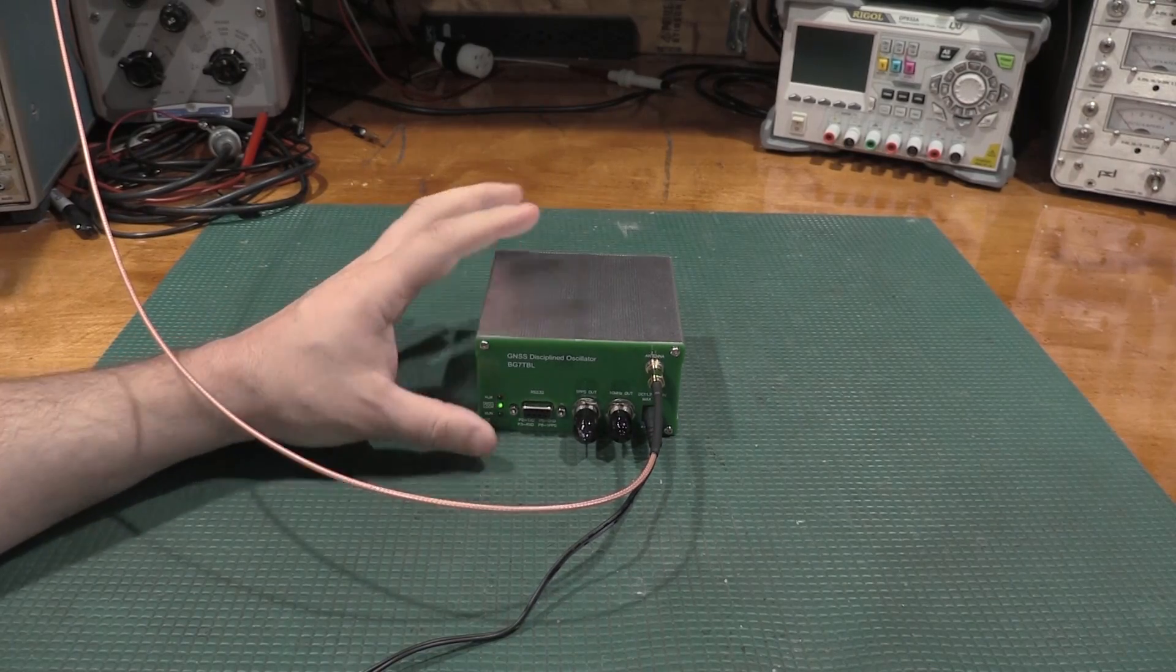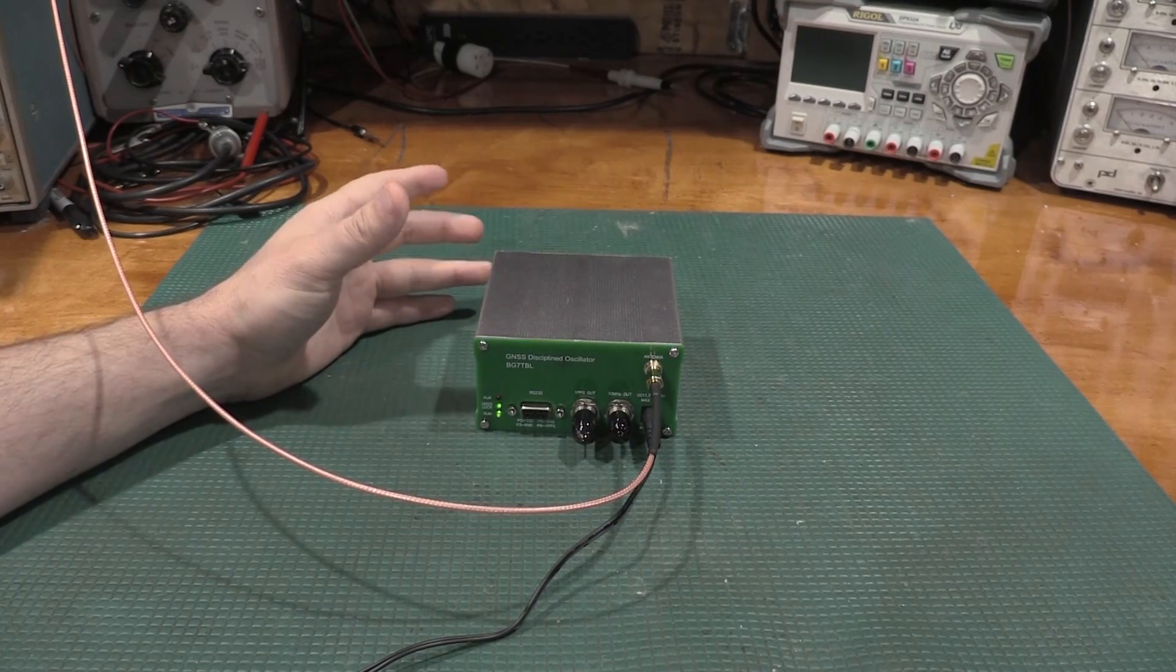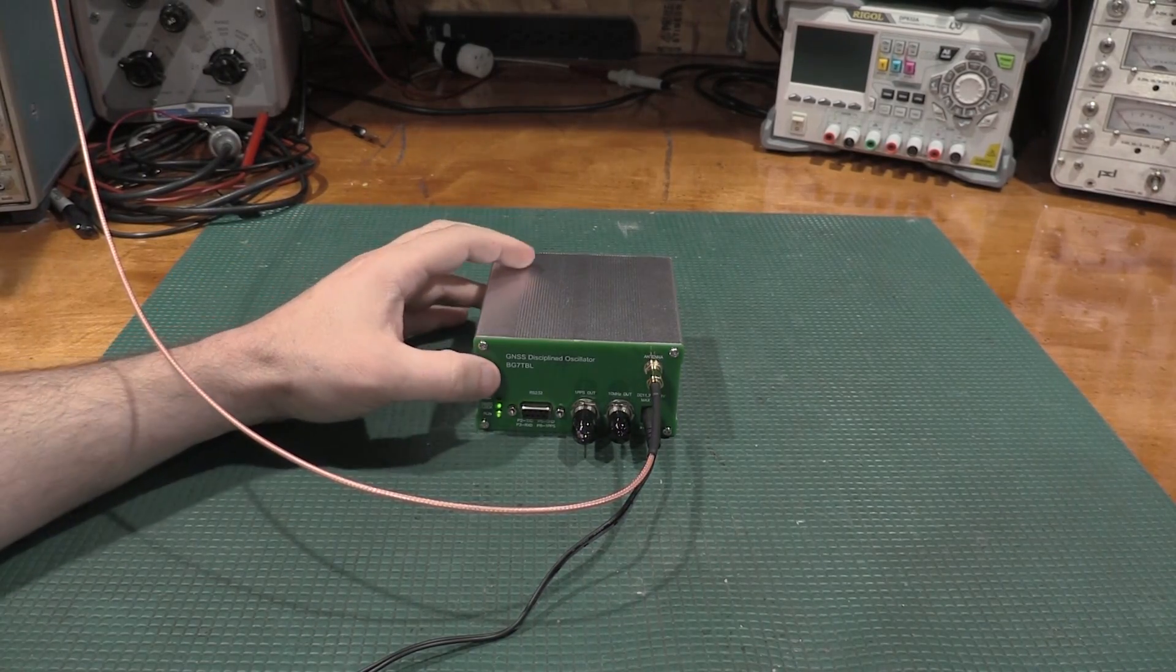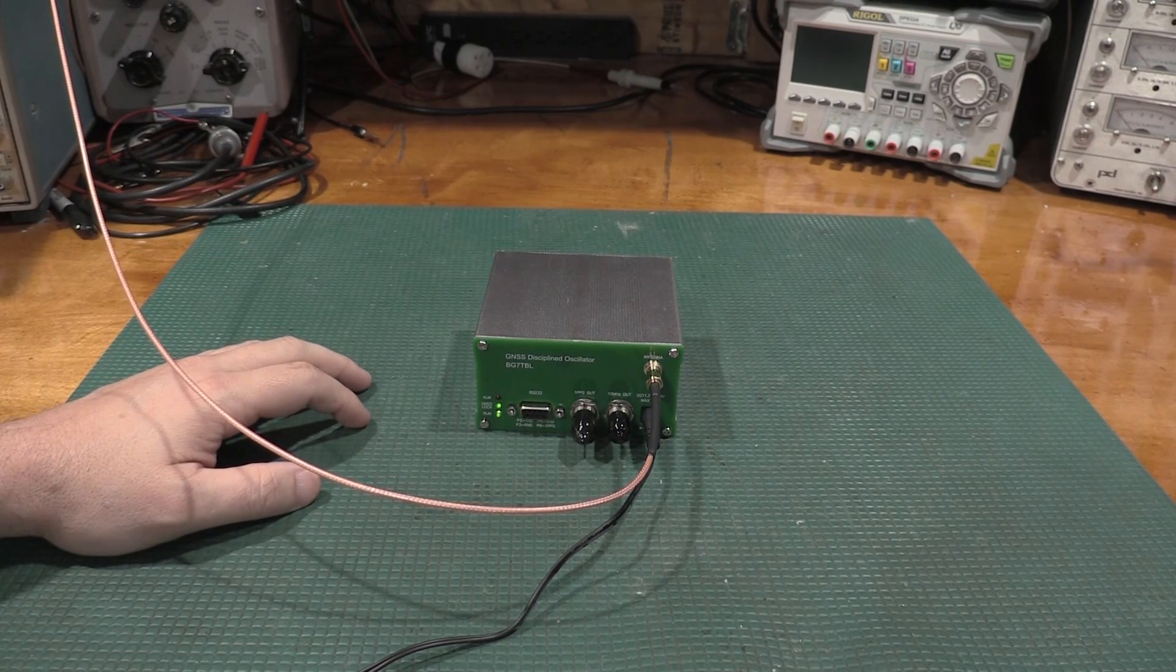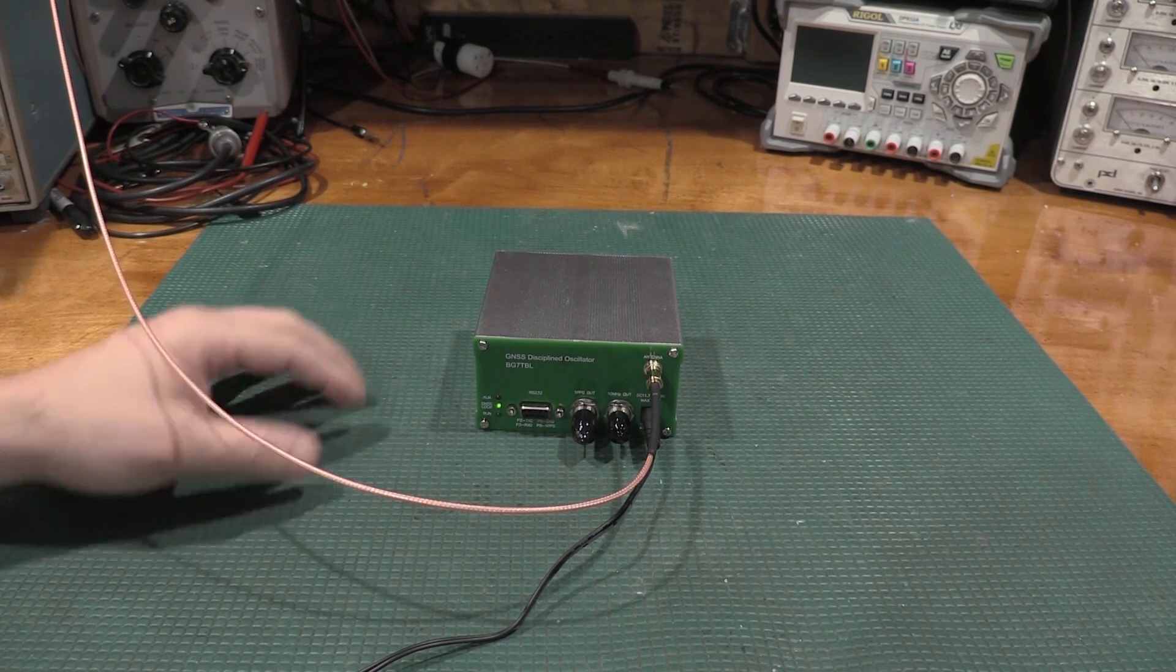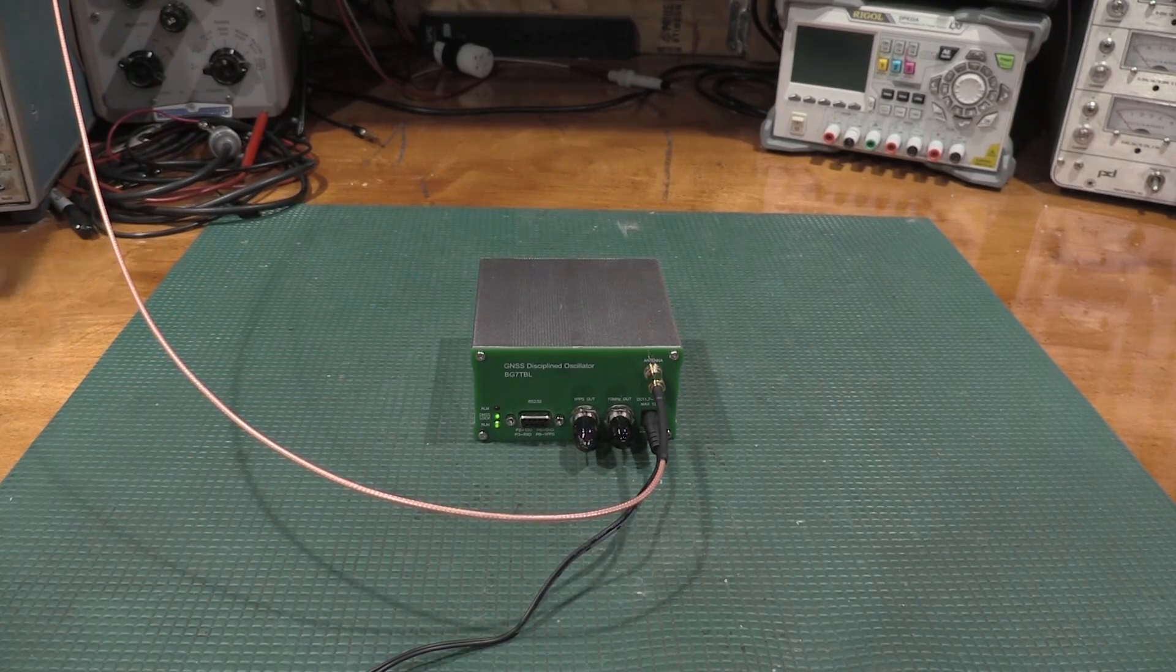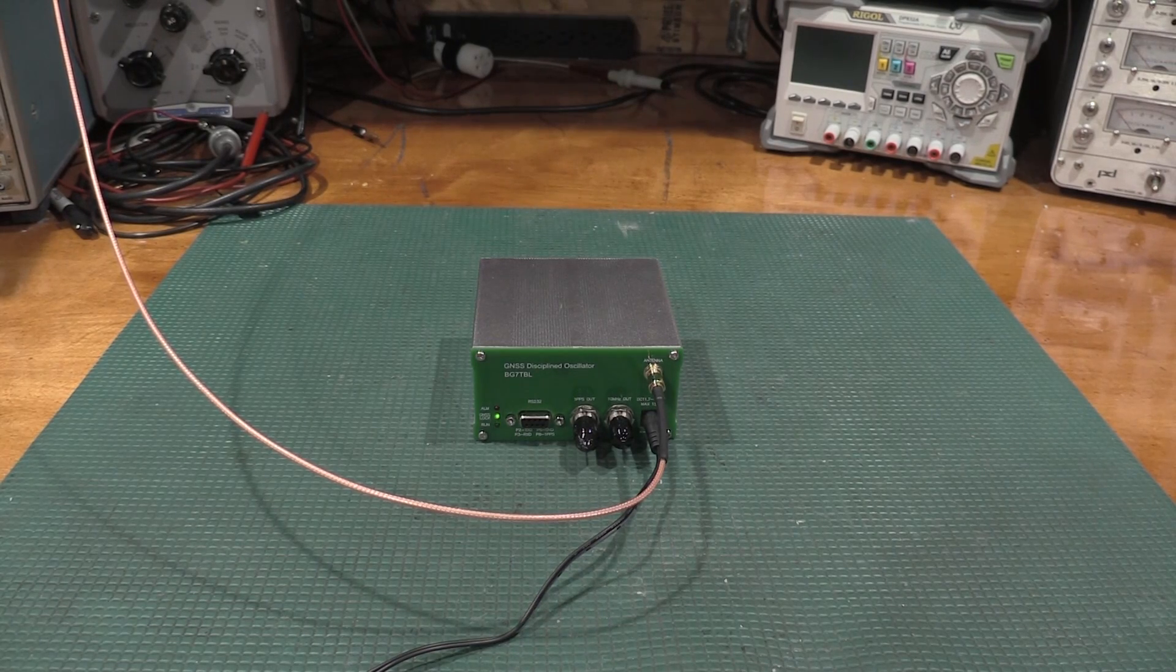What we're going to do is we're going to hook this up. I've got the frequency counter warming up. We'll run it through its analysis, get some numbers. I've started a spreadsheet for model numbers to keep track. We'll also take a look at the output on the spectrum analyzer and on a scope.